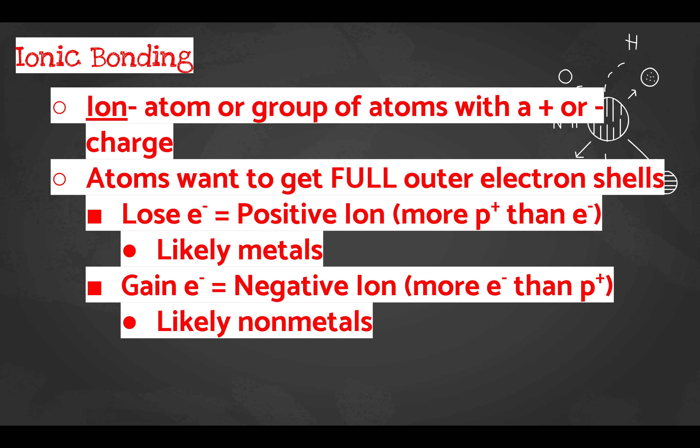Atoms will do different things to get to that full shell depending on how many valence electrons they have. If they have fewer valence electrons — one, two, or three — they are likely to get rid of them, because it's easier to lose one, two, or three electrons than to take in five, six, or seven. Atoms that lose electrons become positively charged ions.